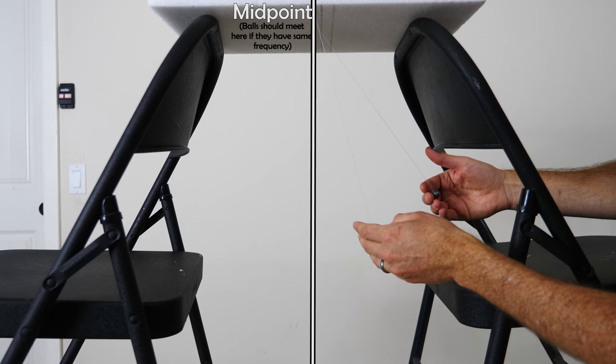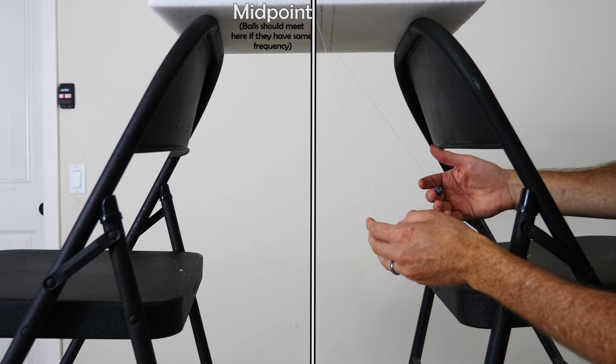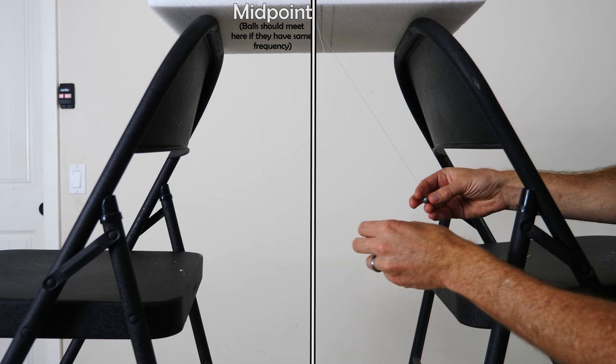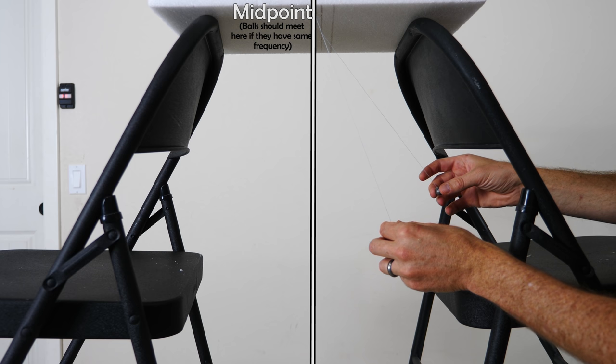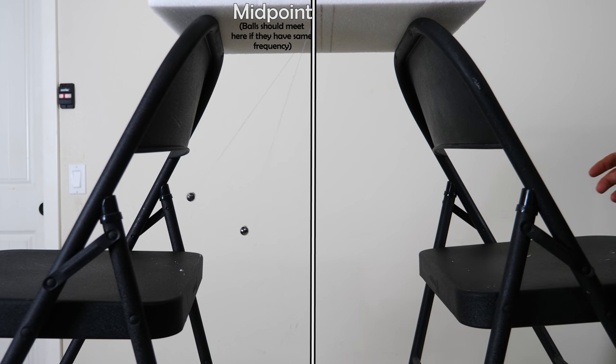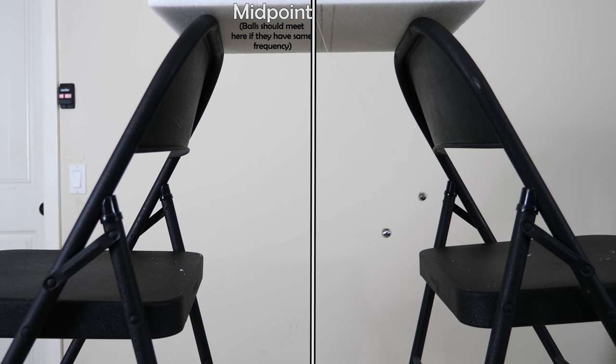Galileo was one of the first people to notice that when you have two pendulums of the same string length and you release them at different points in their swing, so if you have one higher and one lower, even though you release them at different heights, they swing at the same period of oscillation, almost.